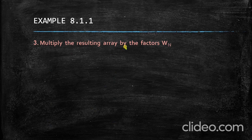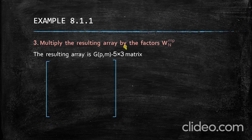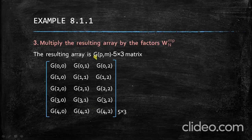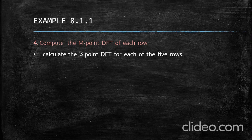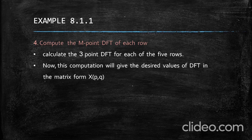The next step is to multiply the resulting array from the previous step by the twiddle factors W_NpM. The resulting array is capital G of P, M, which is also a 5-by-3 matrix. The next step is to calculate the M-point DFT of each row. Here M equals 3 and L equals 5, so we calculate the 3-point DFT for each of the 5 rows. After this computation, we obtain the desired transformation signal capital X of P, Q in two-dimensional array form.